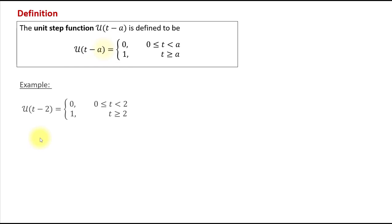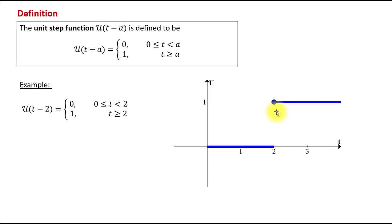Here's an example. We read this as the unit step function at 2, defined in the following way: the value of the function is 0 for t values from 0 to 2, and then at 2 it switches to 1 and remains 1 after that. The easiest way to understand the unit step function is by looking at its graph. We can see how the function value is 0 from 0 to 2, and then it becomes 1 for all values of t greater than or equal to 2.